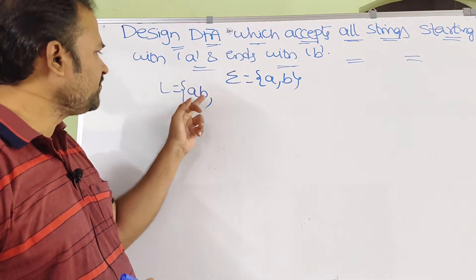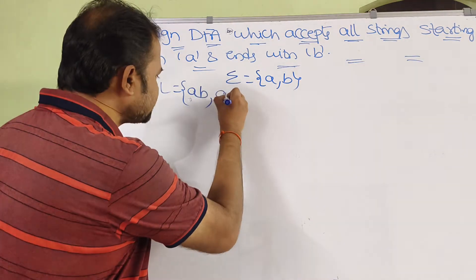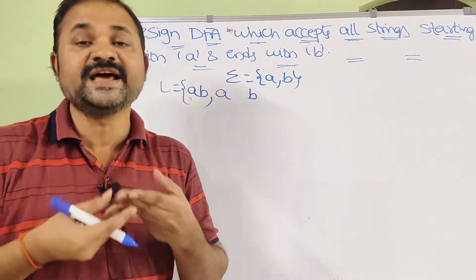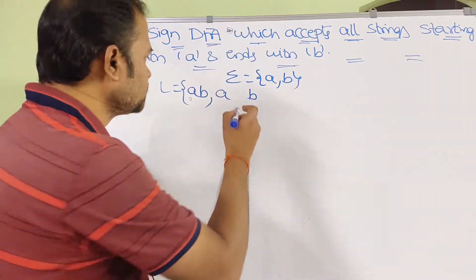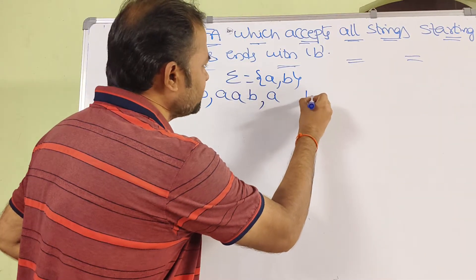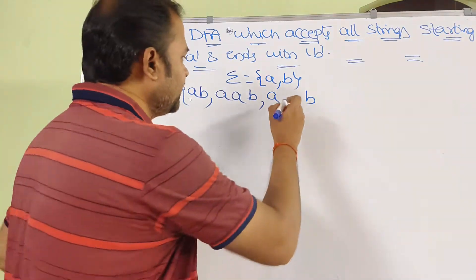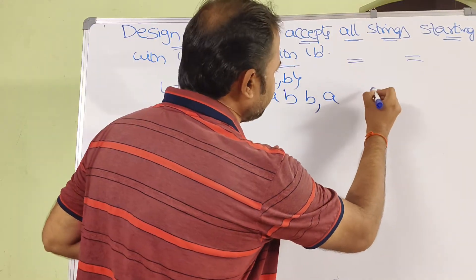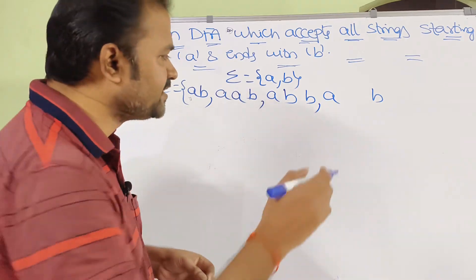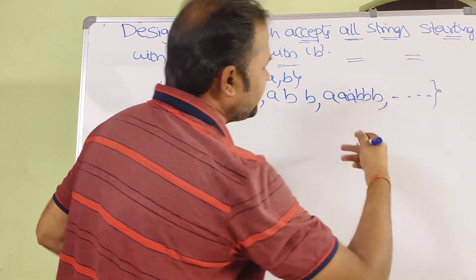Assuming the minimum case, in between A and B we don't have any content, so the string is just A, B. In between A and B we can have any number of A's and B's. For example, A B, A B B, A A B B B — likewise we can have an infinite number of strings.